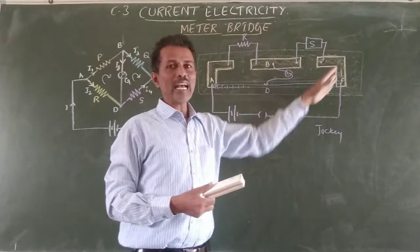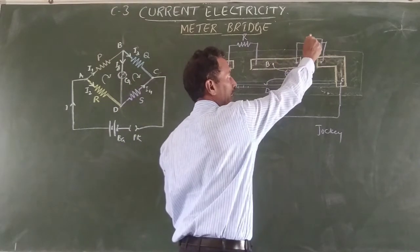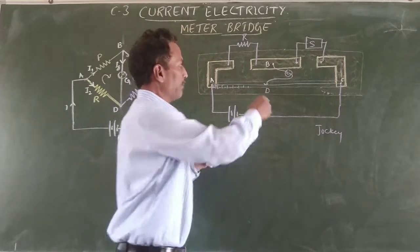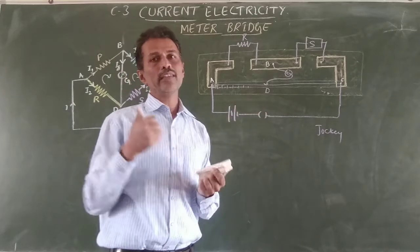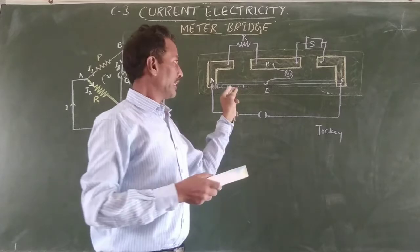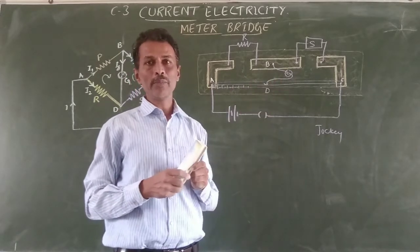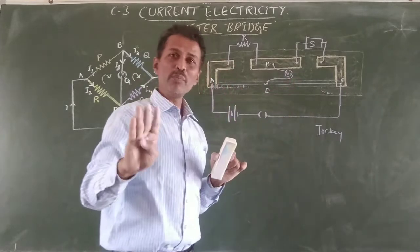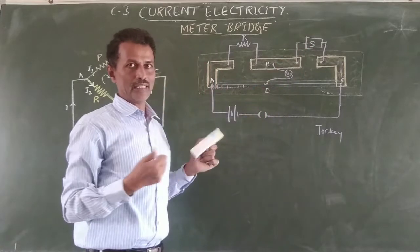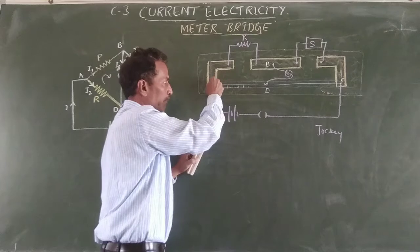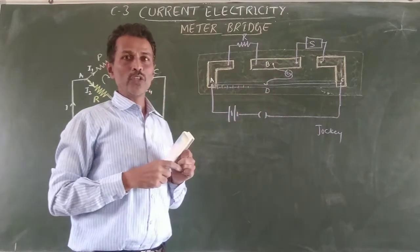To find the unknown resistance value, first plug in a suitable resistance in the standard resistance box. Then move the sliding contactor on the bridge wire till the deflection in the galvanometer becomes zero — galvanometer deflection zero.